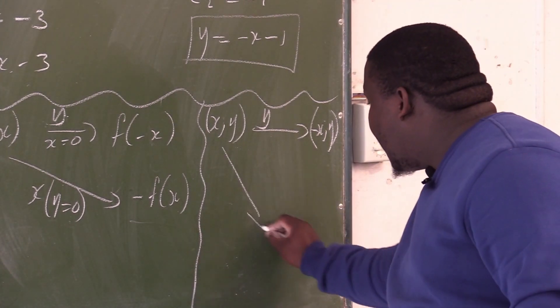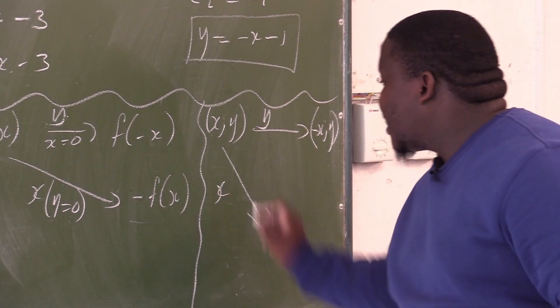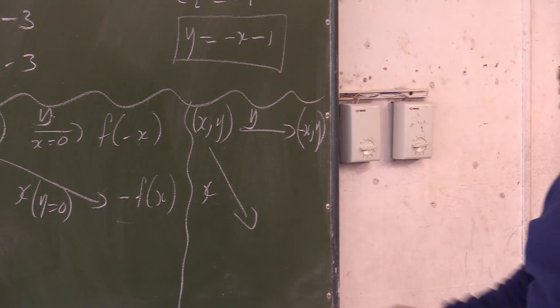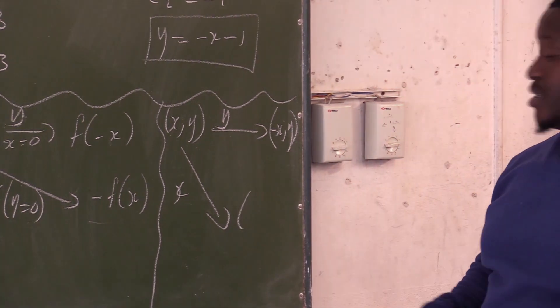But if I reflect the very same point along the x-axis, you want to say negative y. So what would be the new point?